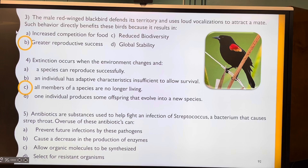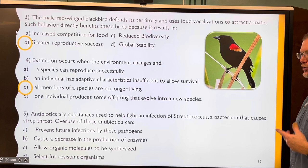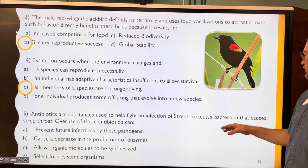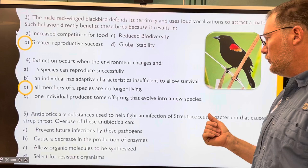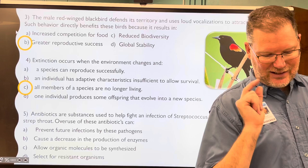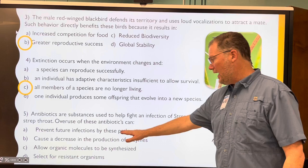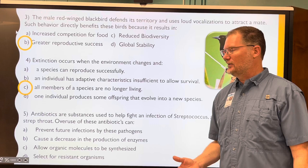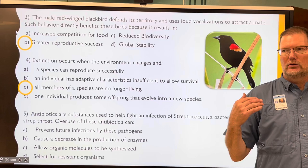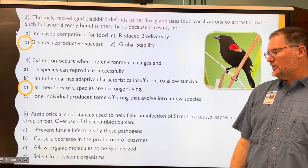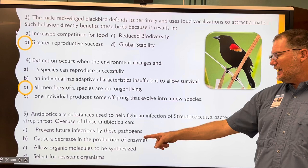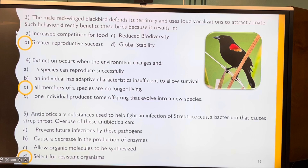Antibiotics are substances used to fight infections. Streptococcus is a bacteria that causes strep throat. Overuse of antibiotics — we discussed this in our last set of notes. The options: overuse can prevent future infections — doesn't make sense; cause a decrease in enzyme production — not related; allow organic molecules to be synthesized — also not related. Overuse of antibiotics selects for resistant organisms, and we know that's the answer — D.